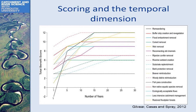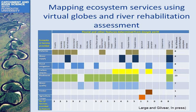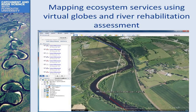We've moved on to start mapping ecosystem services on rivers and assessing river rehabilitation. This involves the link between the features we measure and ecosystem services, using Google Earth to quantify those features in the landscape. We're also looking at new approaches to that as we speak.